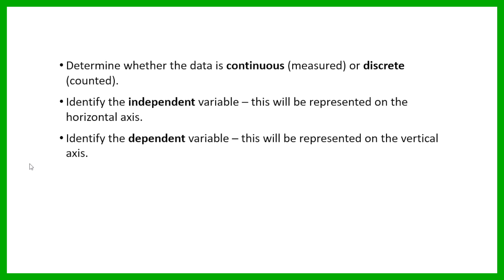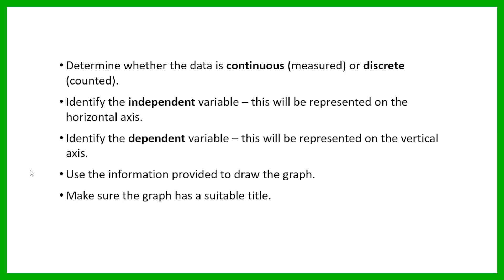Once you know what type of data you're working with and which variable is independent and which is dependent, you then need to use the information you are given to draw the graph. You need to make sure that your graph has a suitable title. If the data is continuous, you also need to make sure that you join the dots or the points with lines.